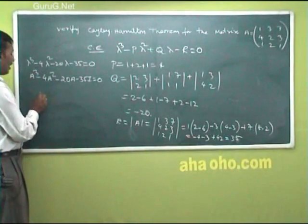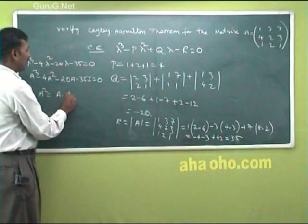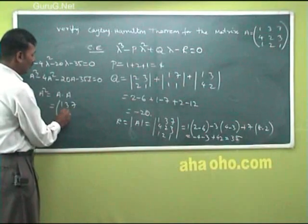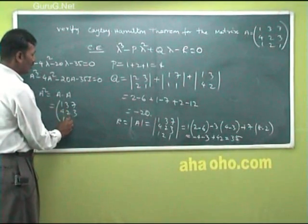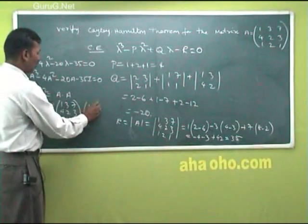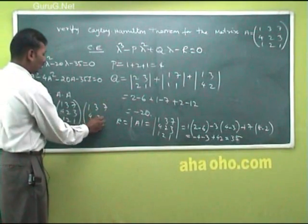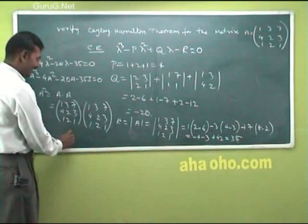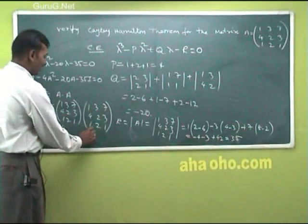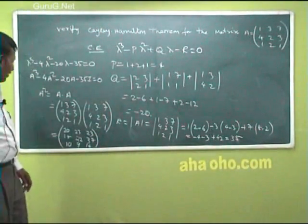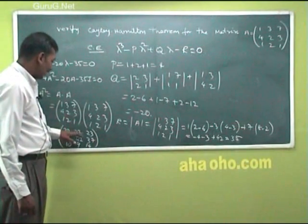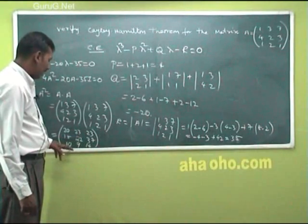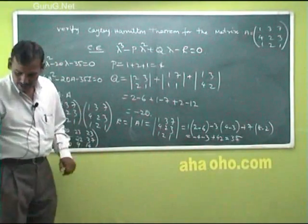A squared equals A into A. Multiplying the matrix A = [1,3,7; 4,2,3; 1,2,1] by itself gives A squared = [20, 23, 23; 15, 22, 37; 10, 9, 14].